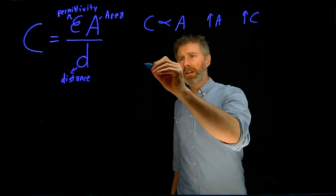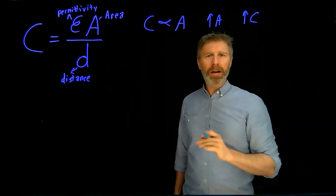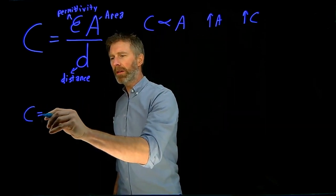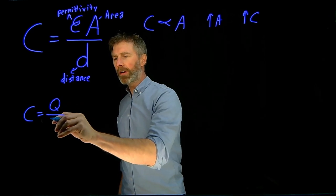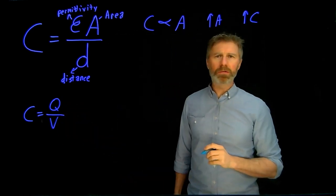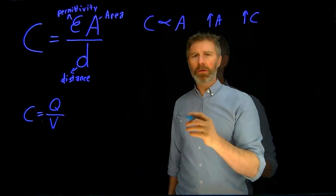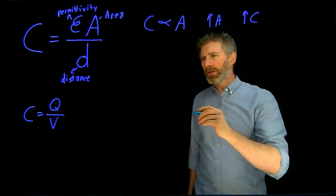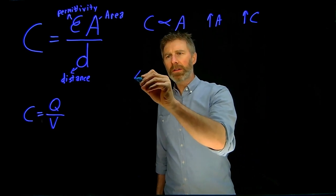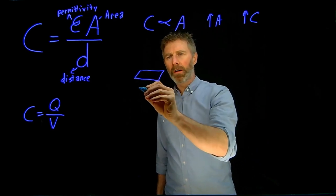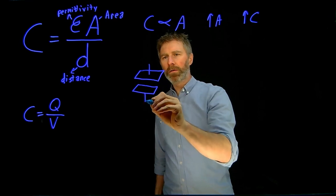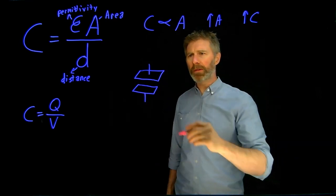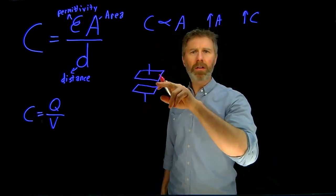To think about why this is the case, let's go back to the definition of capacitance. Capacitance is the capacity or the capability of storing charge per applied volt to the parallel plates. So to increase the capacitance, you can increase the capability of holding charge. If we look at a simple diagram of the parallel plates, we've got a top plate and a bottom plate. When a voltage is applied to these plates — let's say positive at the top and negative at the bottom —